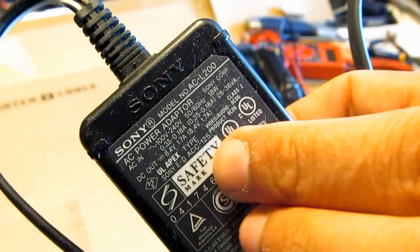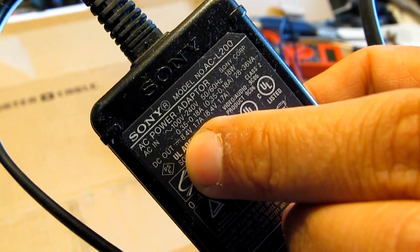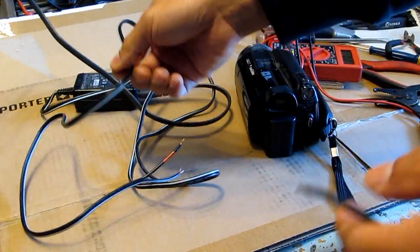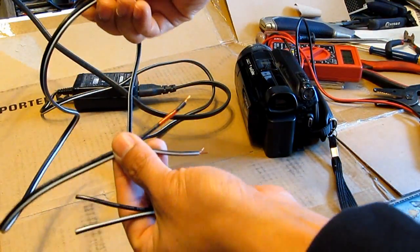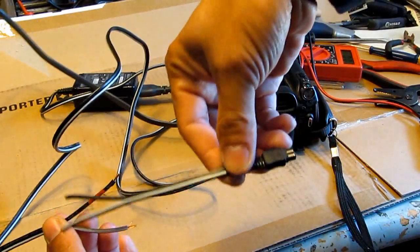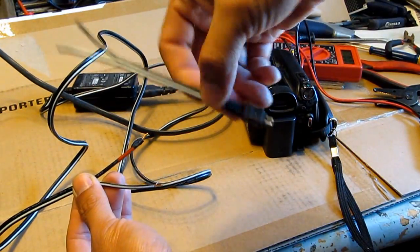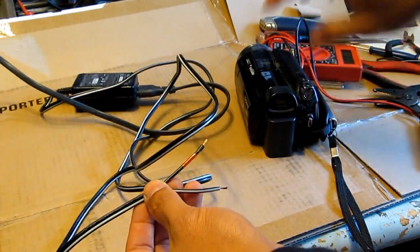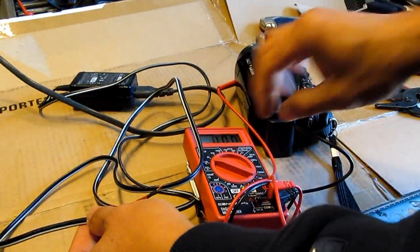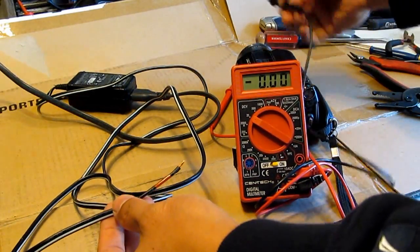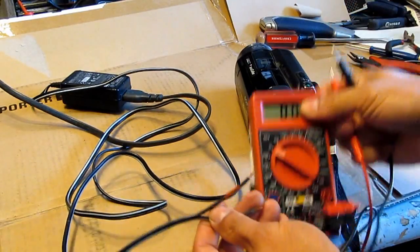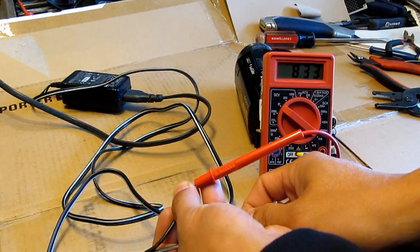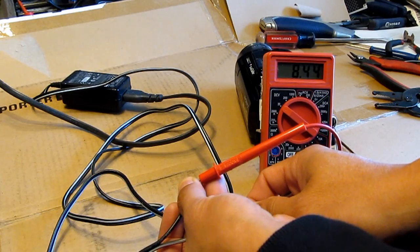Zoom in here, as you can see it says DC output 8.4 volts. So I already cut the wire from the AC adapter. This is the original plug and I already stripped and separated the wire. So I use a voltmeter to measure the voltage. Let me show you what we've got here. 8.4 volts, 8.44 volts.